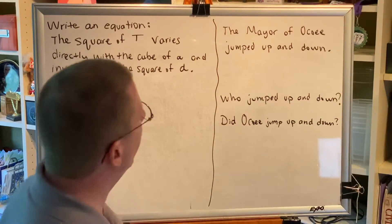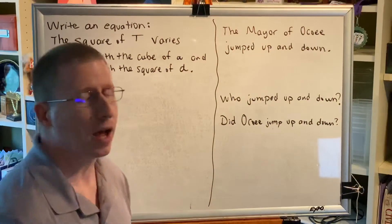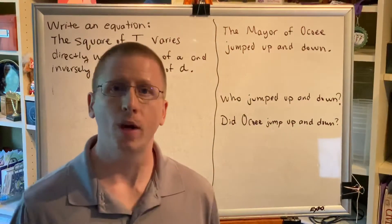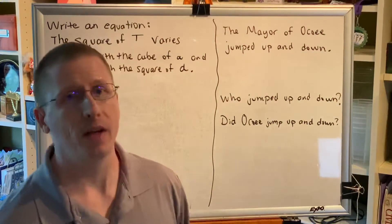Let's look at a similar but different situation. The mayor of Ocoee jumped up and down. So, who jumped up and down? Would it be appropriate to say that Ocoee jumped up and down?